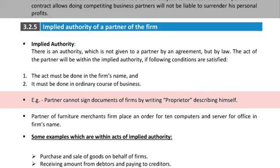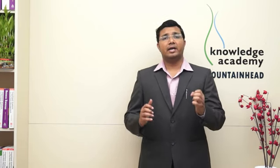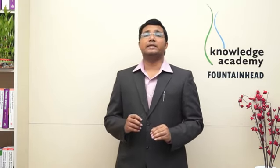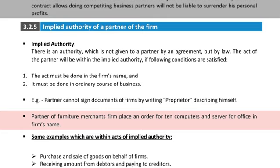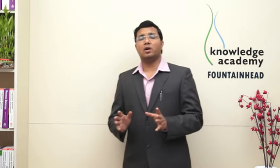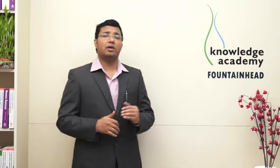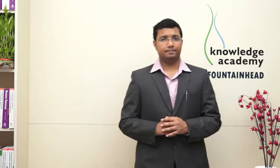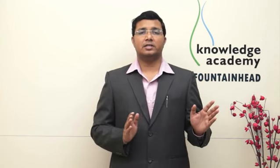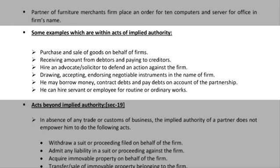For example, a partner cannot sign documents of the firm by writing 'proprietor' — there is a team, a partner association, a partnership firm, so you should sign under the banner of 'partner,' not as proprietor. Say a partner of a furniture merchants firm places an order for 10 computers and servers for the office in the firm's name — if you are already dealing in computers, that is ordinary course of business and is fine. But if you are in the business of milk and milk products, you cannot order 10 computers and servers without asking other partners — that is not ordinary business; it is a special transaction.